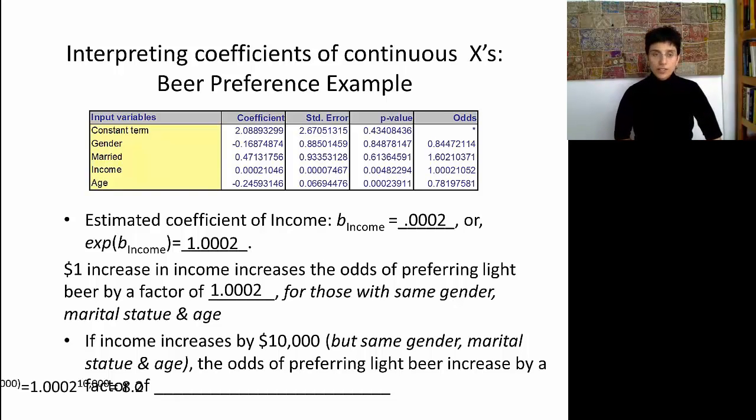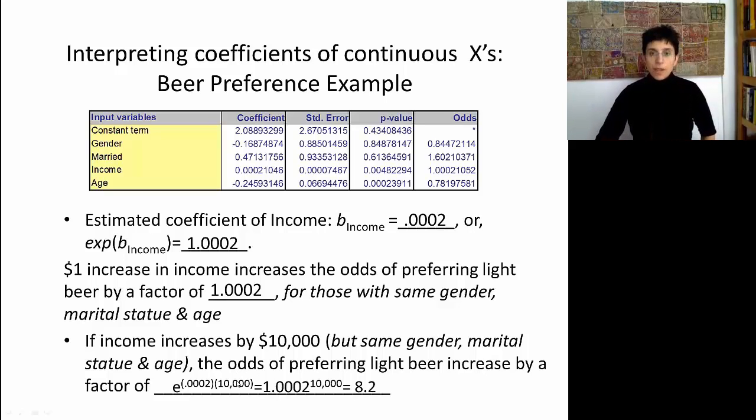Okay, so let's see how this works. What's going to happen here is that we're going to have to multiply the 10,000 by the original coefficient, which was 0.0002, and only then take an exponent. A shortcut in this case is just to take the odds and take it to the power of 10,000. And in both cases, now we get a factor of 8.2, which sounds a little more significant. What this means is that for every additional $10,000 in your income, your odds of preferring light beer are increasing by a factor of 8, holding everything else constant.